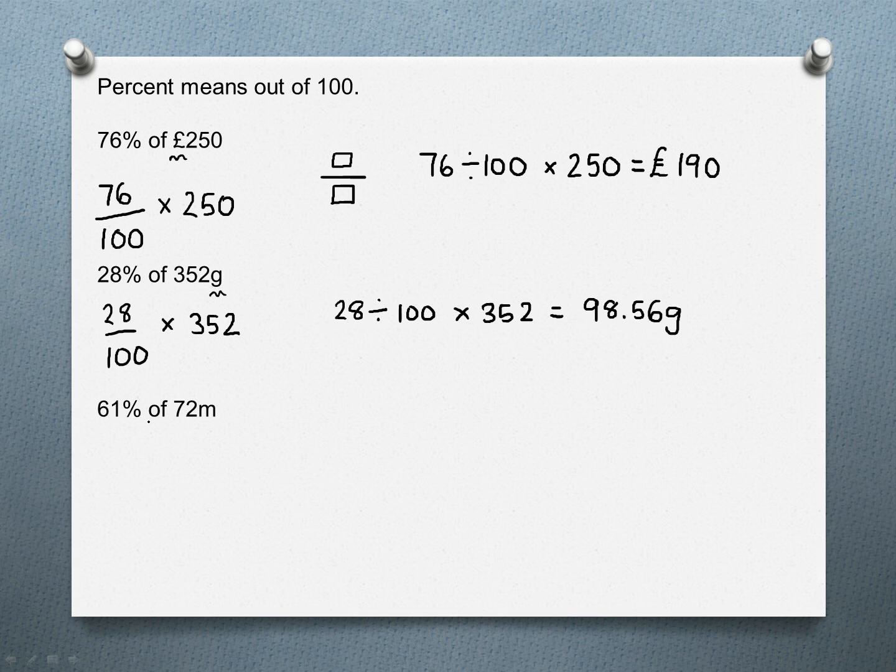The last one: 61% of 72 metres. So 61 out of 100, of means multiply. So put that in your calculator, which gives you the answer 43.92 metres. And that's how you work out percentages using a calculator.